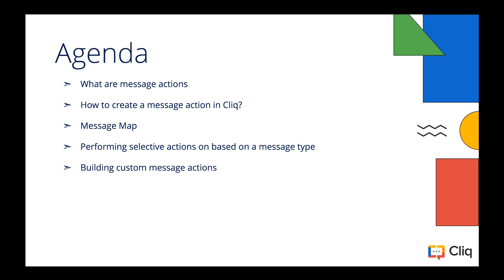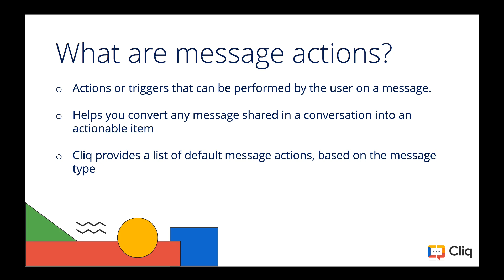First up is an introduction of what message actions in Cliq are. We'll take a look at the default message actions and their purpose first, to understand how custom message actions are different from the default message actions, followed by understanding the message map. Since we are performing an action on a message, we will get an idea about the message map and what attributes are passed when a message action is triggered, and then message actions for different message types. Finally, a hands-on where we will look at how to perform selective actions based on message types.